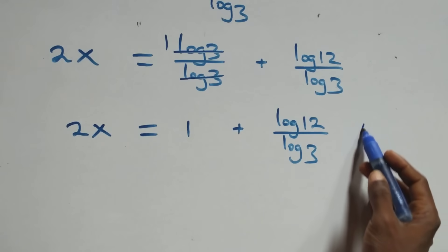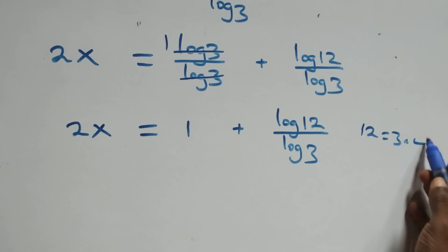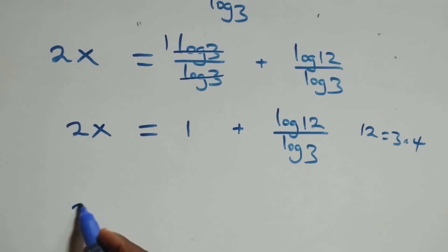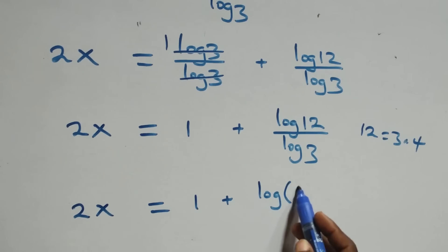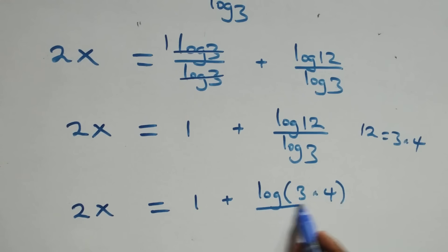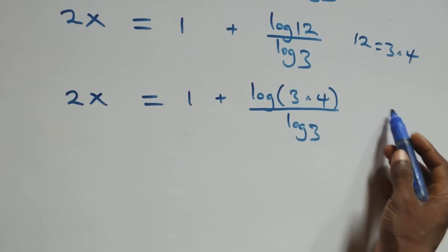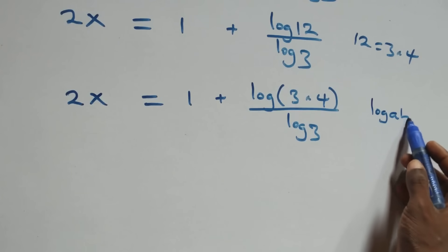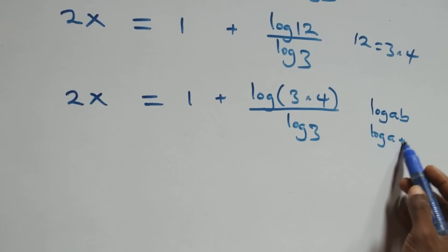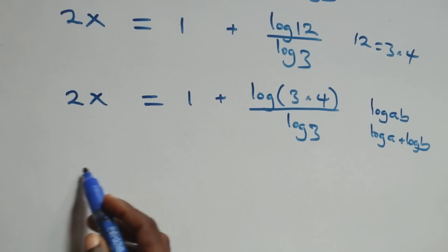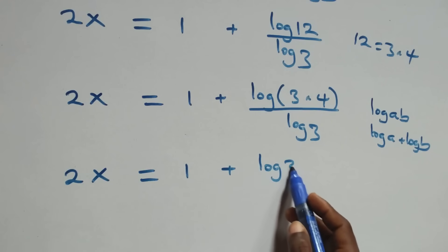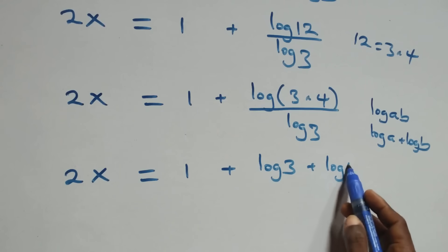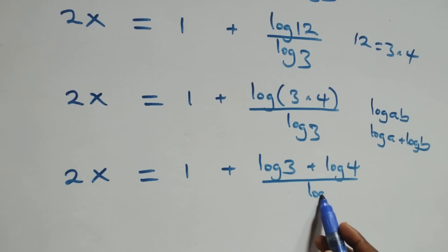The next step: we write 12 as 3 times 4. So we have 2x equals to 1 plus log(3 times 4) over log 3. Applying the product rule again, we have 2x equals to 1 plus (log 3 plus log 4) over log 3. The log 3 terms cancel, giving 2x equals to 1 plus 1 plus log 4 over log 3, that is 2 plus log 4 over log 3.